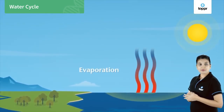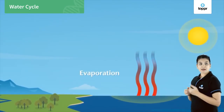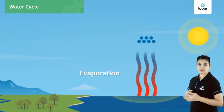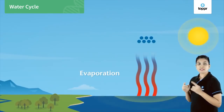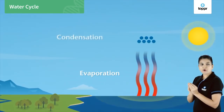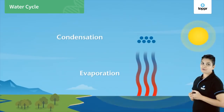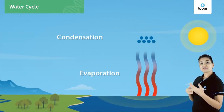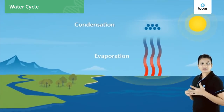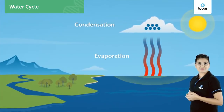In the next step, the water vapors rise up and get cooled. These water vapors then condense to form tiny droplets of water. These tiny droplets of water float in the sky and form the clouds.